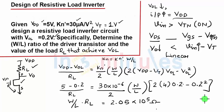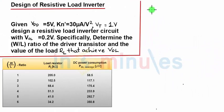Before we do that, we should also understand that DC power dissipation for a resistive load inverter is given by VDD by 2 into VDD minus VOL by RL. You have already seen this in the previous clips.